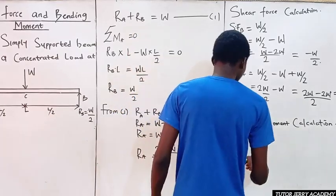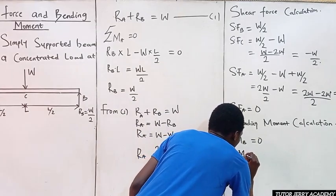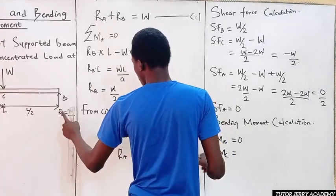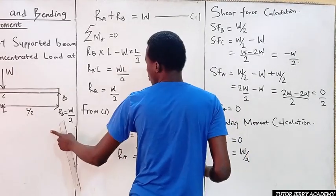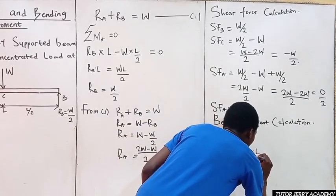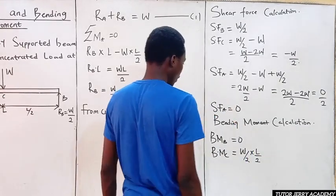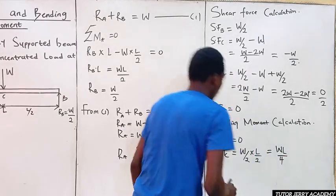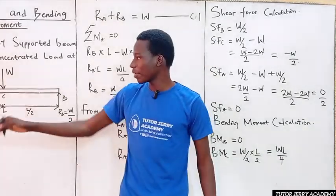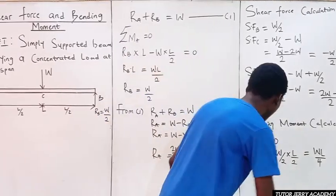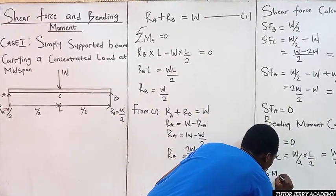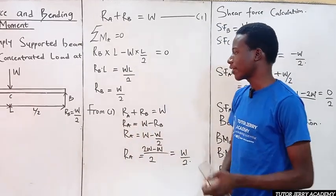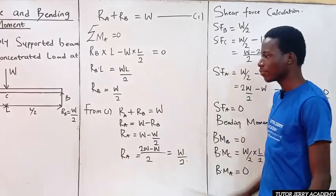To calculate the bending moment at point C, the force is W/2 and the perpendicular distance from B to C is L/2. So bending moment at C equals W/2 multiplied by L/2, which equals WL/4. The bending moment at A equals zero. Next we will draw the shear force and bending moment diagrams.